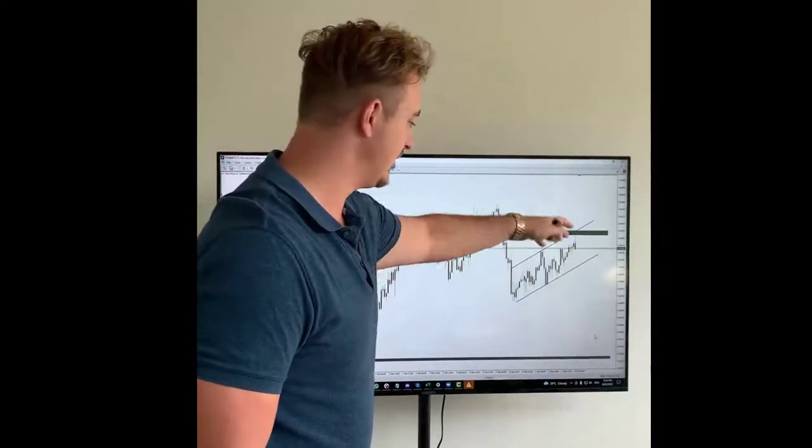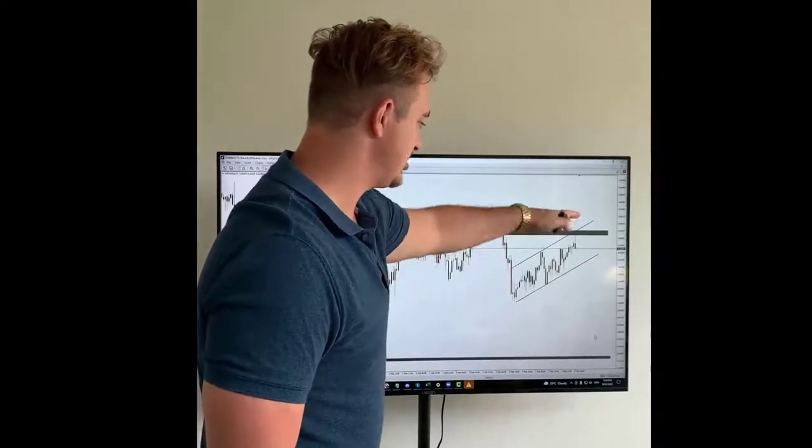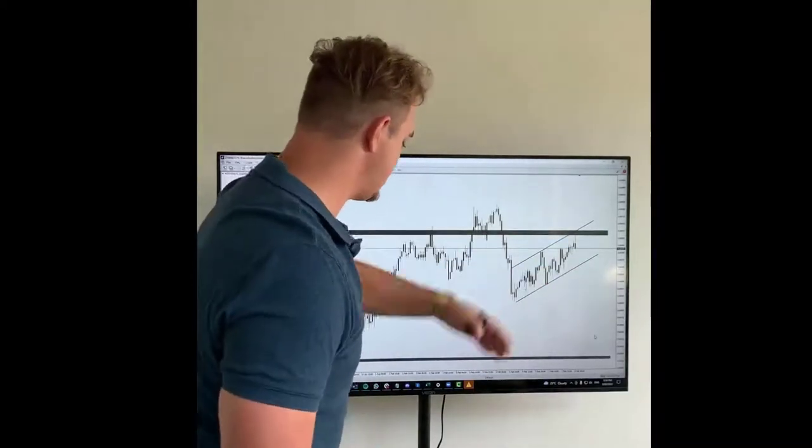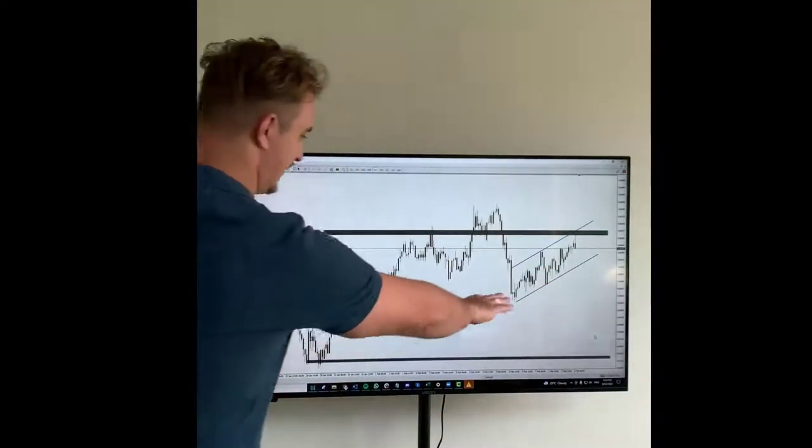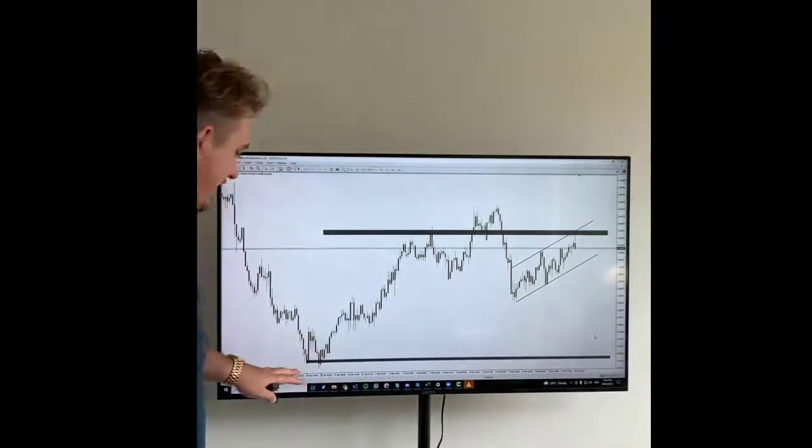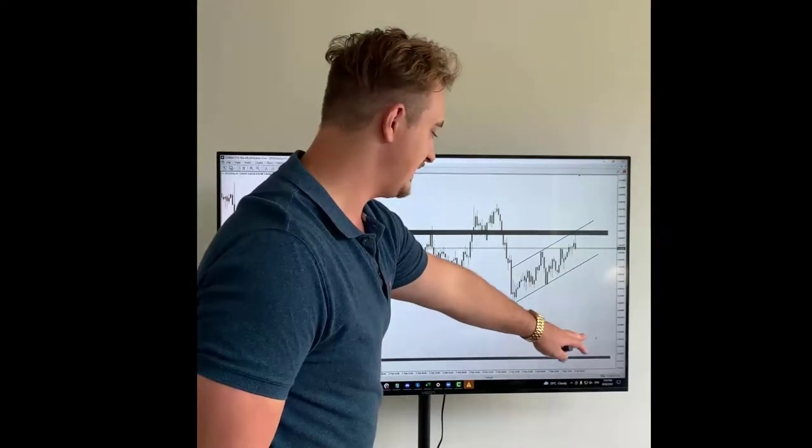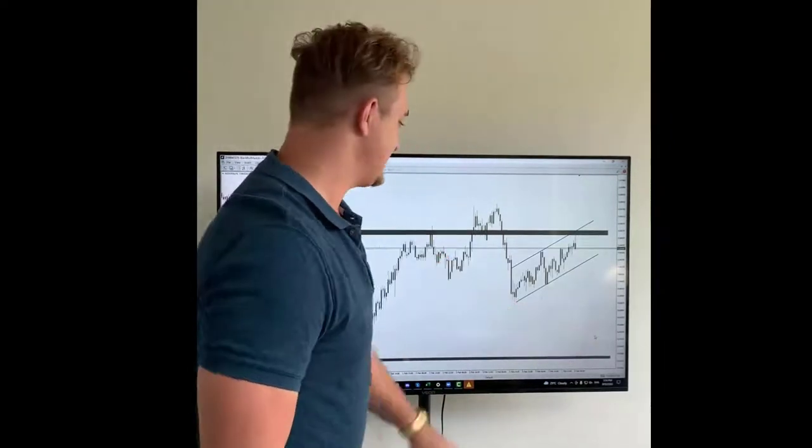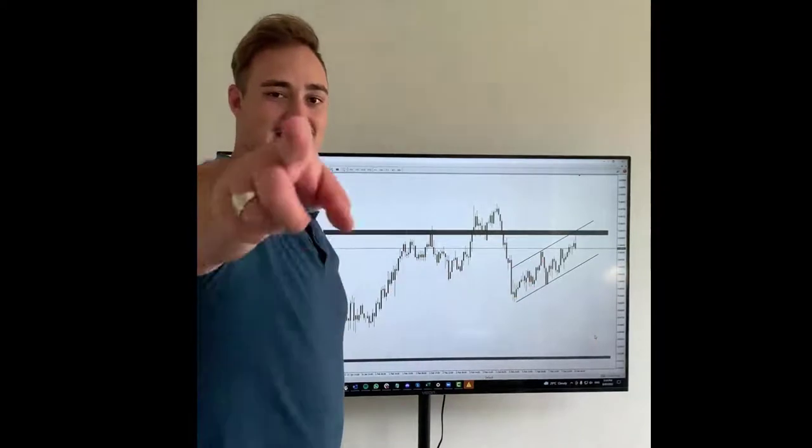If we can get a nice engulfing closing candle, we'll look for a move to the downside. Obviously stop losses above these highs. Potential targets that we're looking at - we have a couple of support and resistance zones coming up we need to be aware of, but overall targets looking down here at the support 0.65385 mark. Hope you enjoyed it, stay tuned, trade safe.